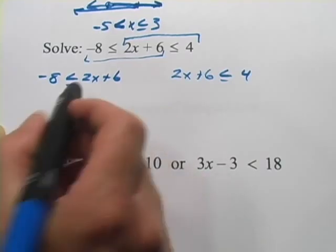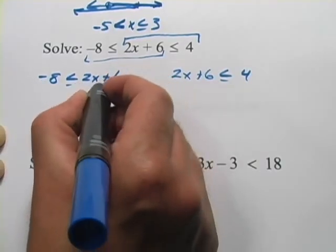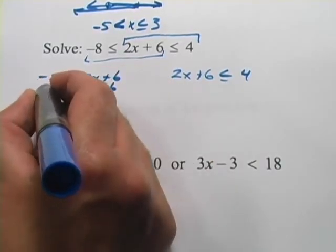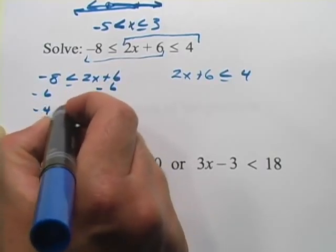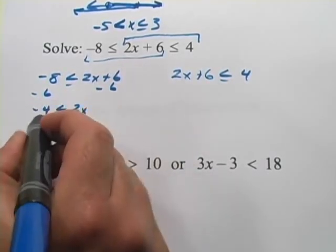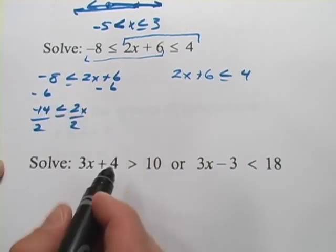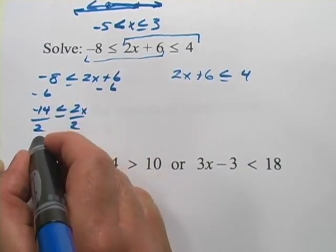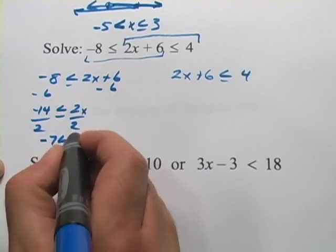Now we're going to solve each of them individually. Let's see, to solve for x over here I think I'm going to subtract 6 first. I get negative 14 is less than or equal to 2x then divide by 2, oops, negative 14. And I get negative 7 less than or equal to x.